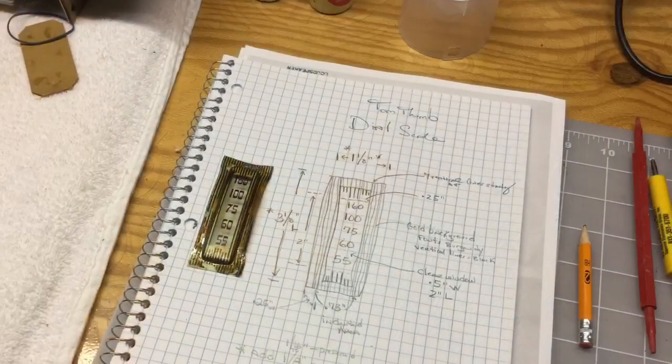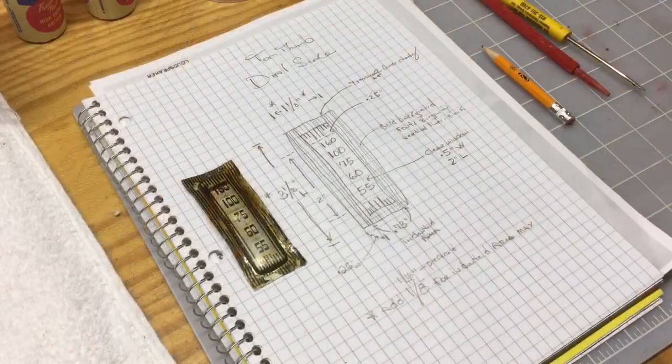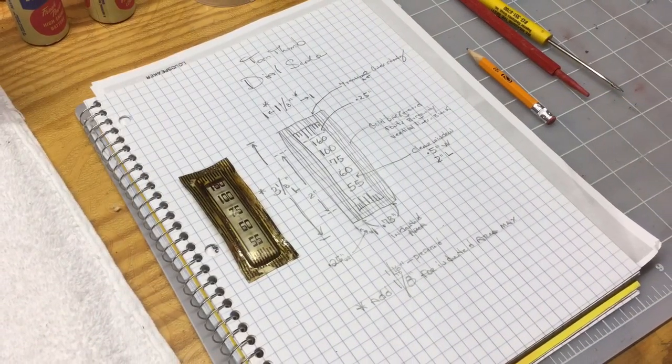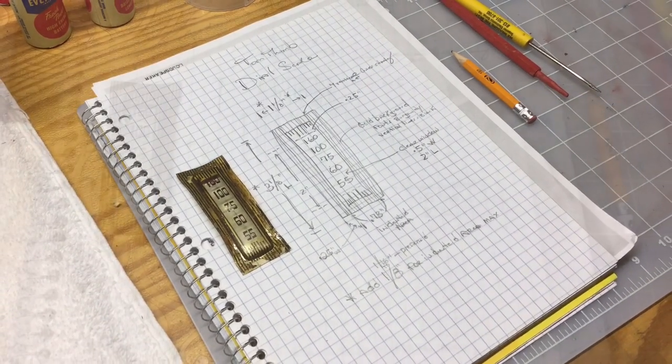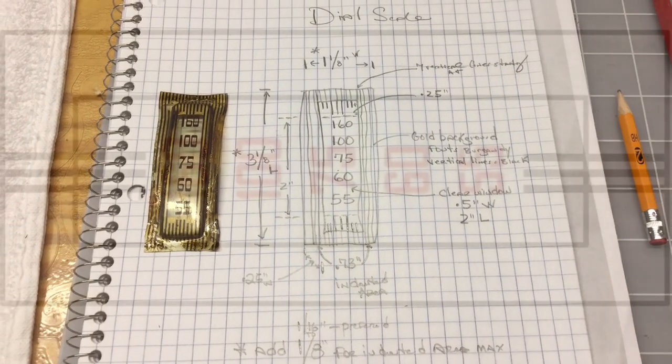So the first thing I did was again document the existing dial scale indicator, making precise measurements. So when I go to the computer and start reproducing the graphics, I've got all my notes in front of me.